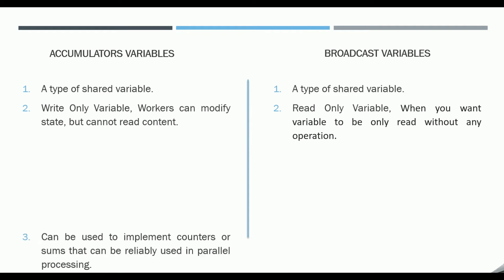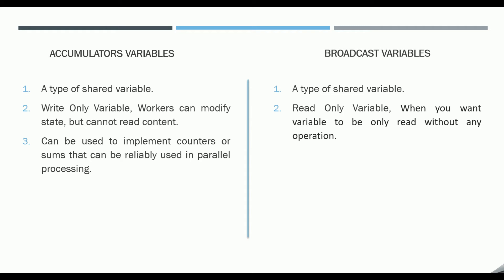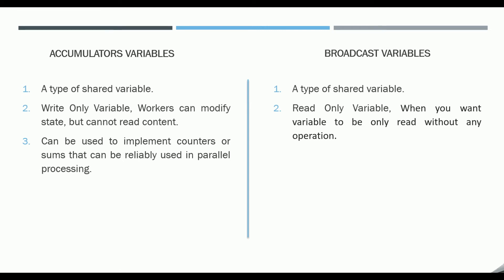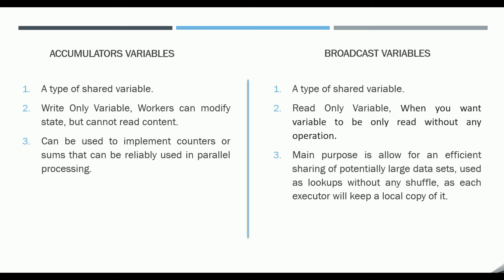Point number three: when can we use accumulators? Accumulators can be used to implement counters or sums that can be reliably used in parallel processing. For example, if you want to count anything or update some variable by all the worker nodes, accumulators can be used. It is mainly for counters and sums. Whereas the broadcast variable's main purpose is to allow for an efficient sharing of potentially large data sets.